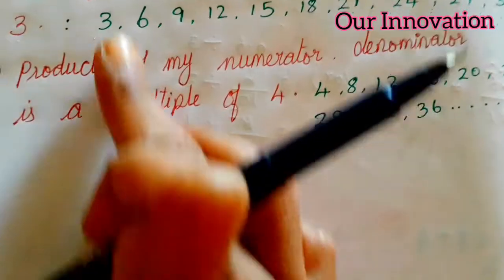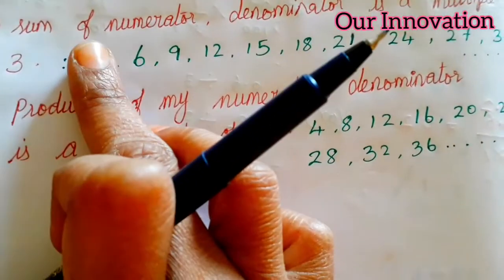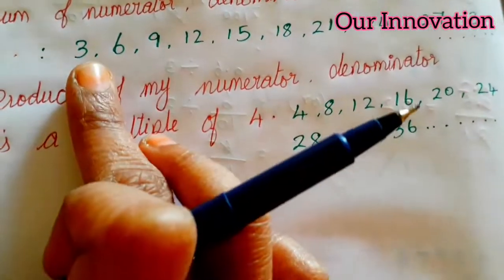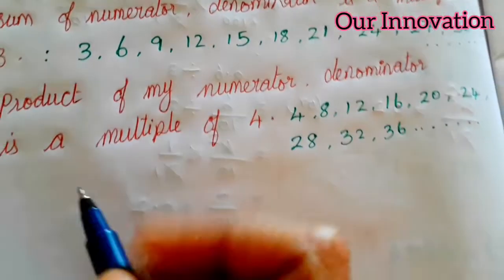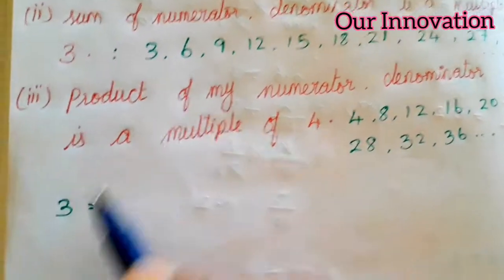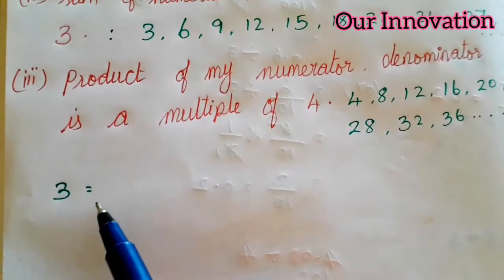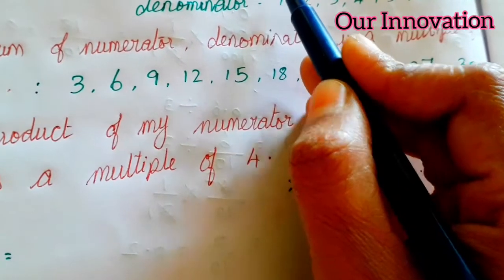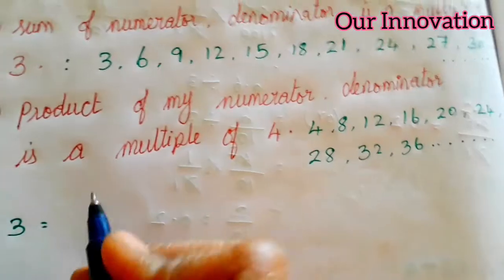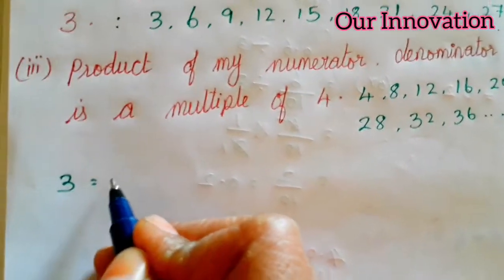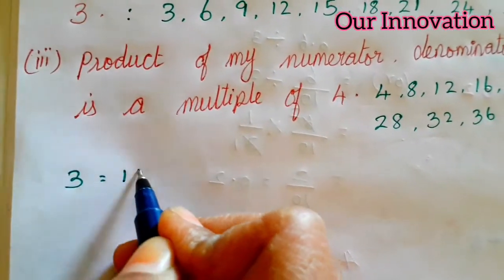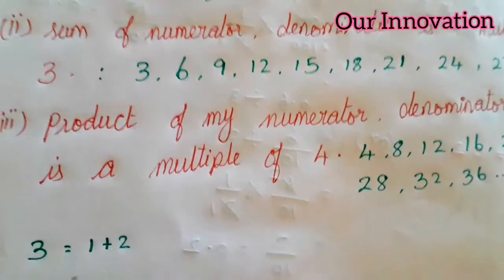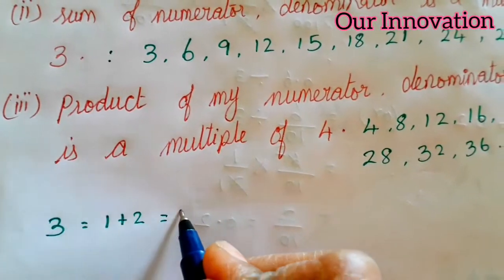Now what do we do first? The sum of numerator and denominator is a multiple of 3. So first, you can put the multiple of 3. Students, what number sums to 3? Numerator and denominator. So if you add 1 plus 2, the sum adds up to 3.